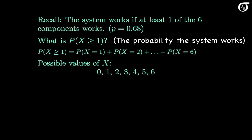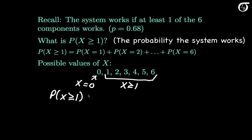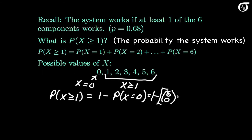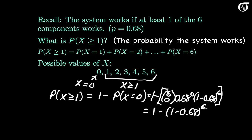The possible values of x are 0 through 6. If we want the probability x is at least 1, the only other possibility is x equaling 0. So the probability that x is at least 1 is simply 1 minus the probability that x equals 0. This equals 1 minus 6 choose 0 times 0.68 raised to the 0 times 1 minus 0.68 raised to the 6th power, which simplifies to 1 minus the probability that all 6 fail. We could have answered this using regular probability rules without relying on the binomial formula.